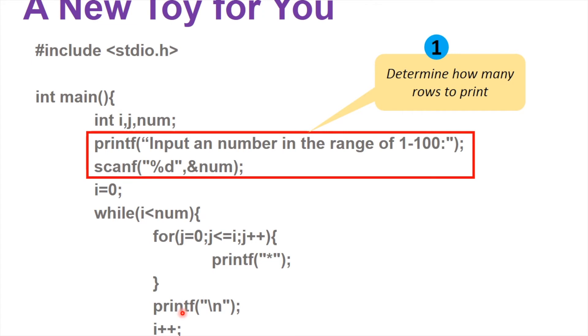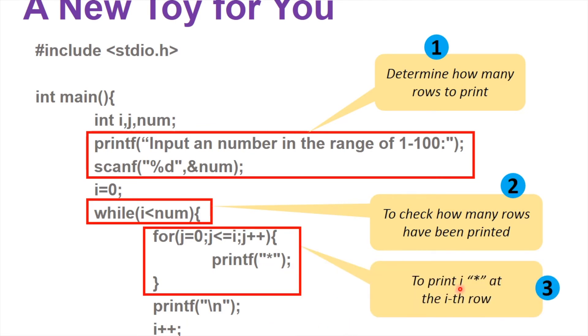However, the for loop here determines how many stars you can print out. So in that case, when i equals to one, we print out only one star. When i equals to two, this for loop will be repeated twice, so in that case you print out two stars. And this goes on and on. For each of the lines, you print different numbers of stars.